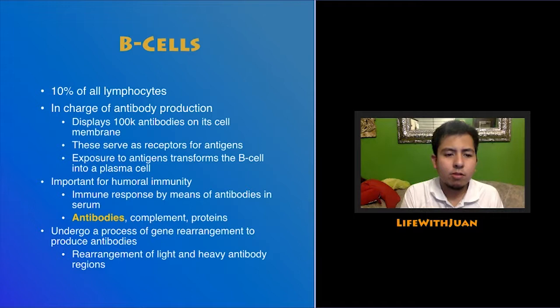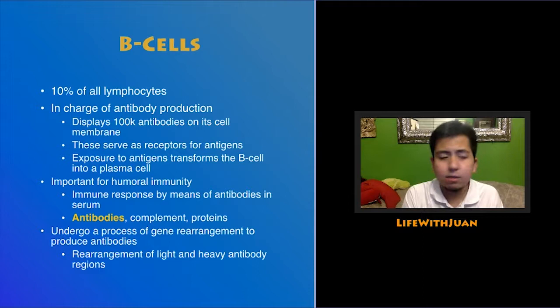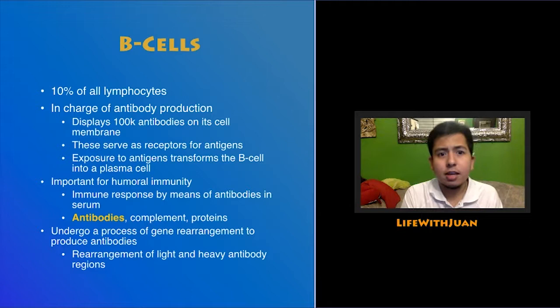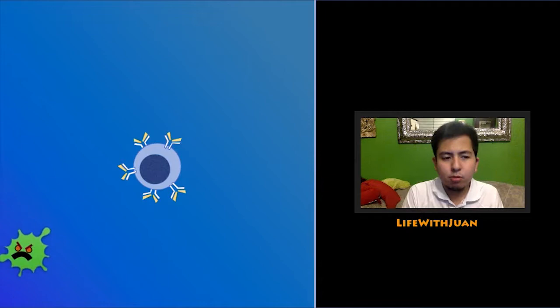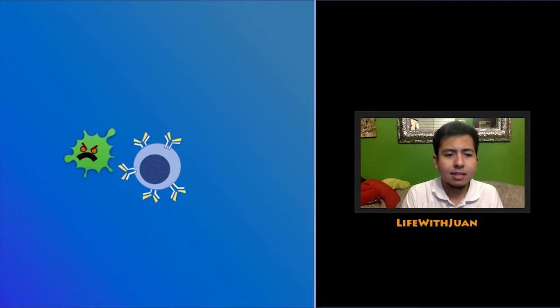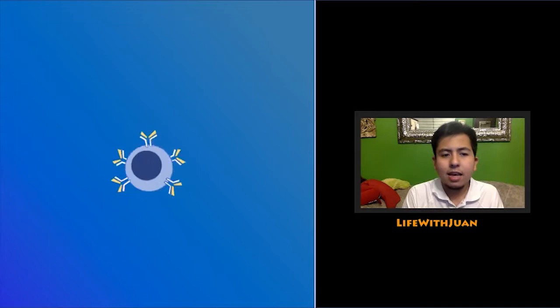Humoral immunity consists of antibodies, complement — antibodies binding to antigens — as well as several proteins, interleukins, and cytokines floating around in your system. B cells undergo gene rearrangement to produce antibodies, for the expression of light and heavy chains — regions present in your antibody. Your B cell floating around in your blood is exposed to a bacteria that triggers its surface antibodies. When triggered, it starts transforming into a plasma cell and releasing antibodies into the serum.